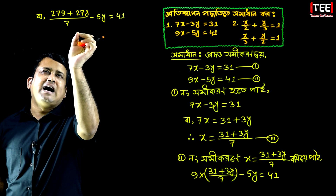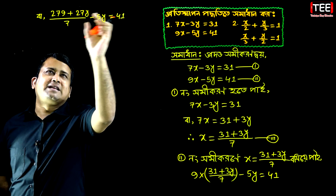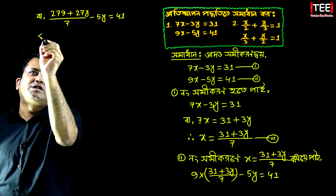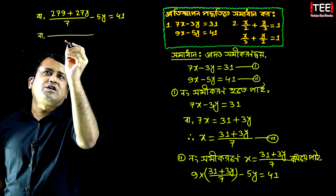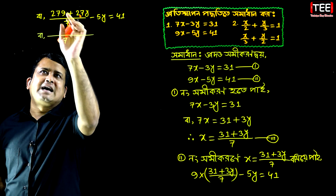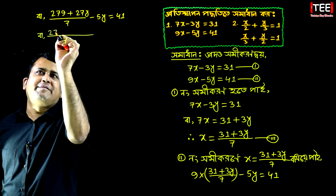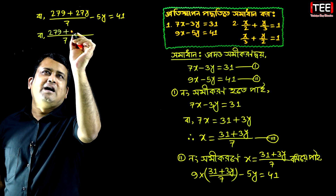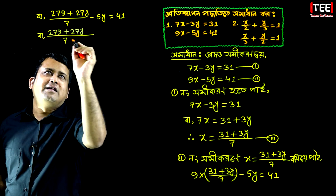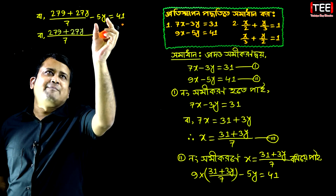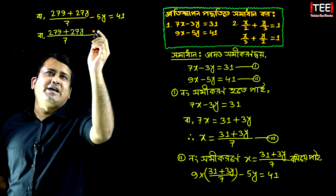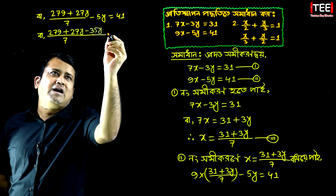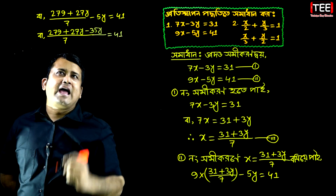Then you can subtract 8. When you set the weight limit, you can use the weight limit. Then we set the weight limit of 279 and like 27y, minus 35y is equal to 41.